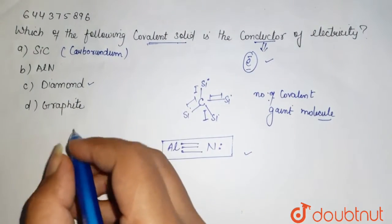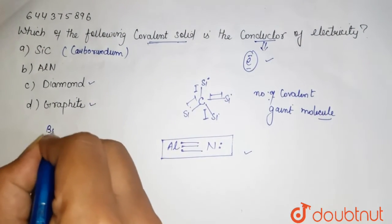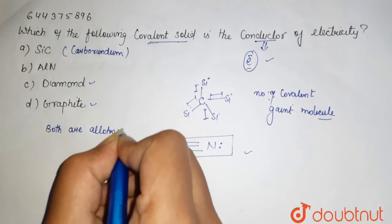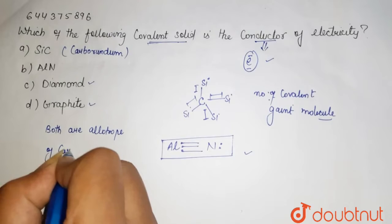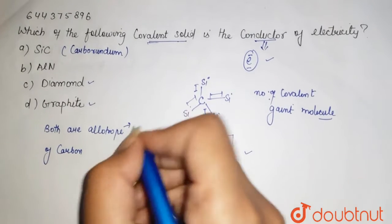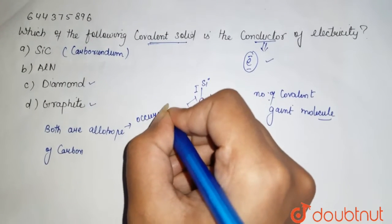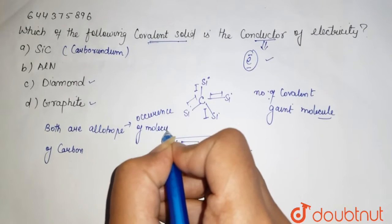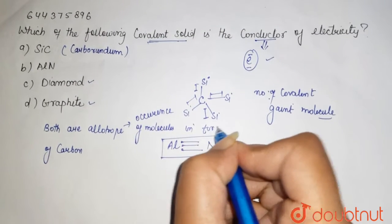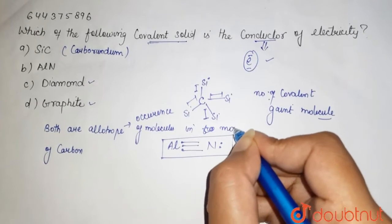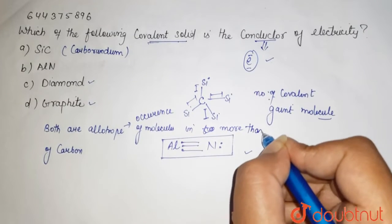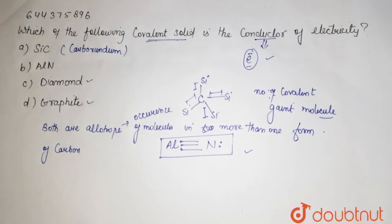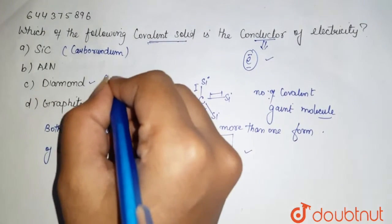Then diamond and graphite, both are allotropes of carbon. Allotropes are those occurrences of a molecule in more than one form. Here the diamond, it is the hardest substance known.